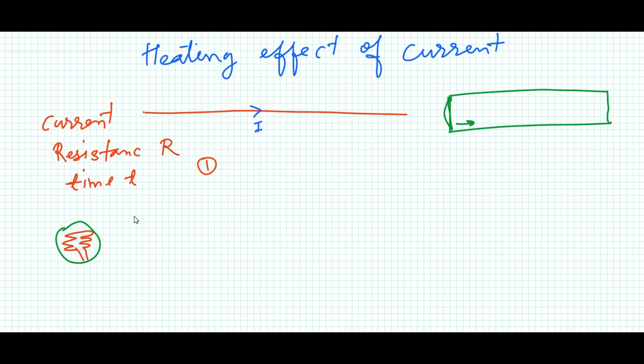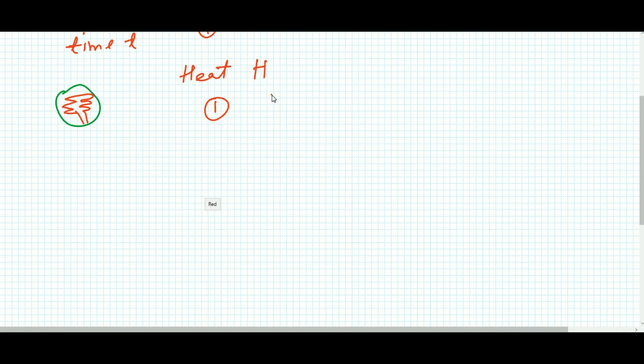First case: heat generated is directly proportional to the square of the current passing through the conductor. That means the amount of heat produced inside the conductor is directly proportional to the current flowing through it.